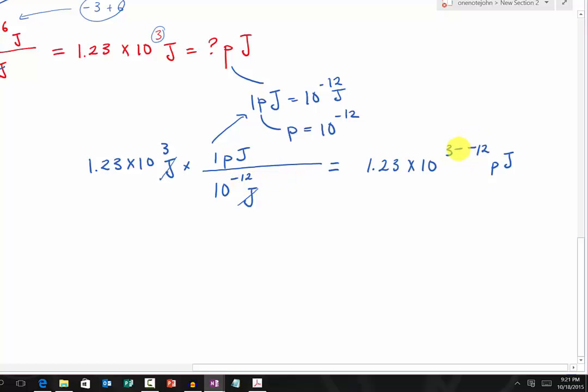When you minus a negative, this will become a positive. Therefore, we have 1.23 times 10 to the 3 plus 12. That gives us 1.23 times 10 to the 15 picajoule. And there you go, that is our final answer.